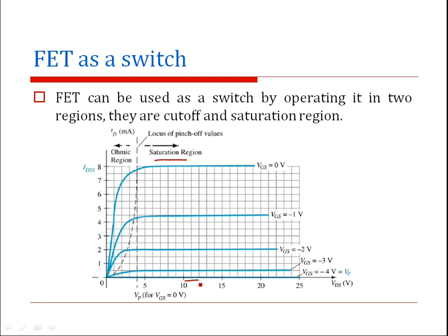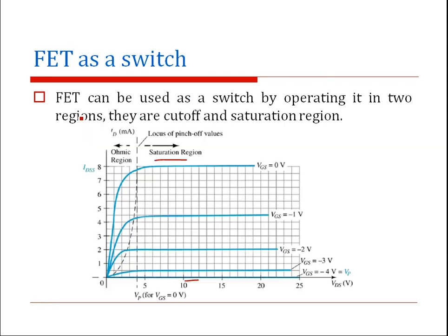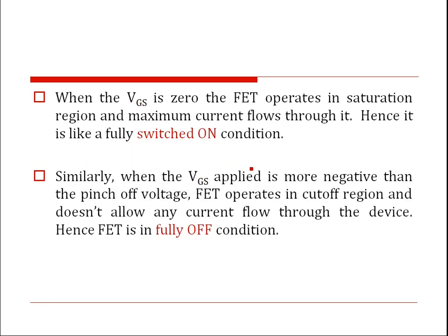In the cutoff region, when VGS is greater than VP, the FET goes to cutoff. When VGS is zero, the FET operates in the saturation region with maximal drain current — this is like a fully switched-on condition. When VGS applied is more negative than the pinch-off voltage, the FET operates in its cutoff region and will not allow any current to flow from drain to source.